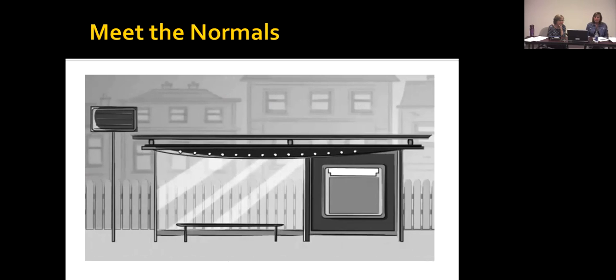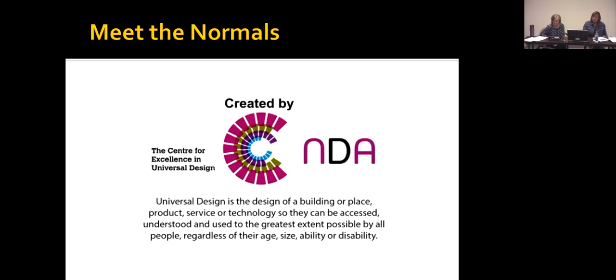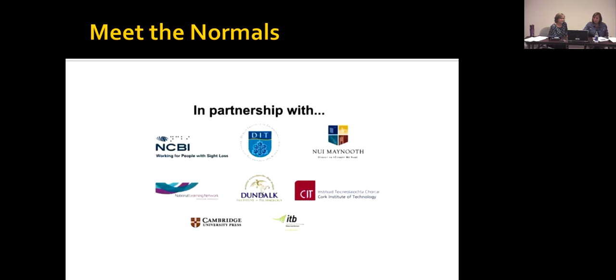Universal design is the design of a building or place, product, service or technology, so they can be accessed, understood and used to the greatest extent possible by all people, regardless of their age, size, ability or disability. Created by the Center for Excellence in Universal Design at the National Disability Authority, in partnership with Dublin Institute of Technology, NU Imanoof, Cork IT, Dundalk IT, National Learning Network.